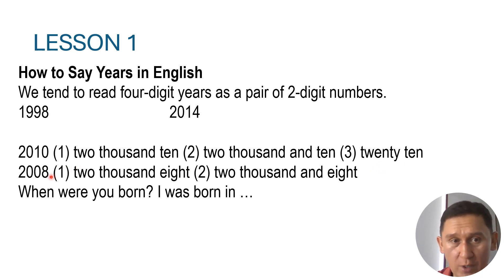But we have this one. This one is a little different from the other one. Two thousand eight is in a complete way, and the other one two thousand and eight.